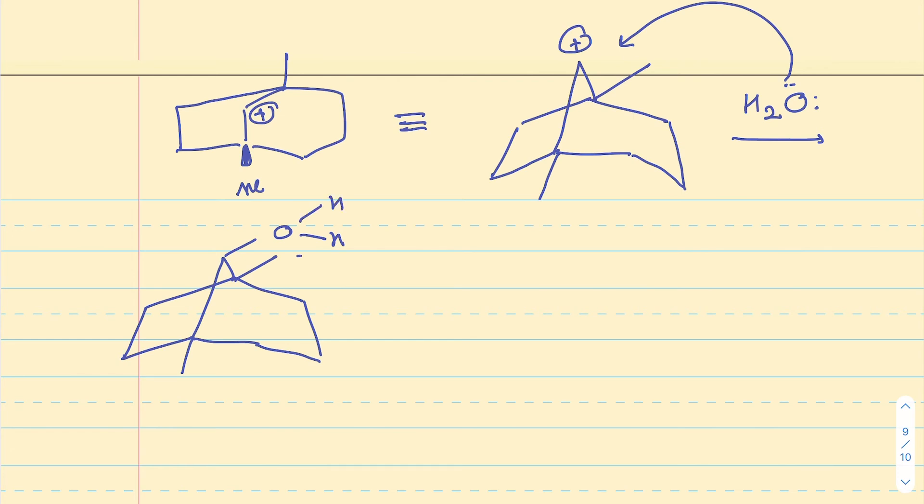All that needs to happen from this point is basically deprotonation of what I get at this step. I have a positive charge on oxygen. Another water molecule comes in, abstracts the proton to basically alleviate the positive charge, and that gives me the product.